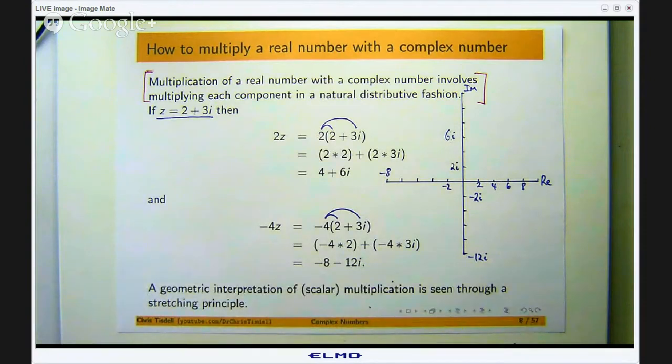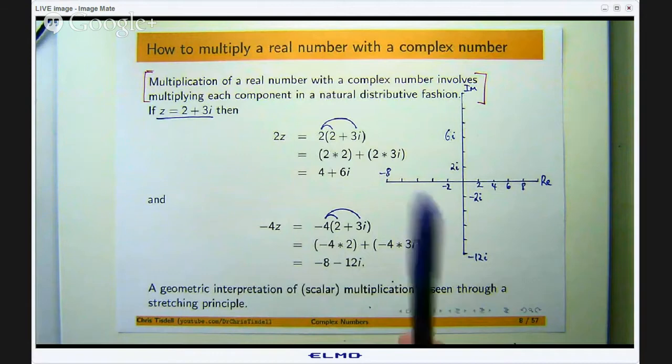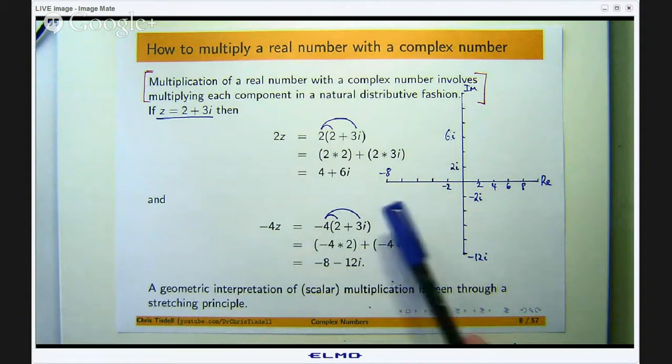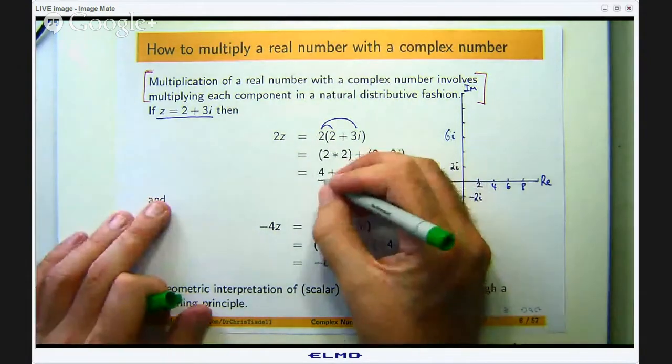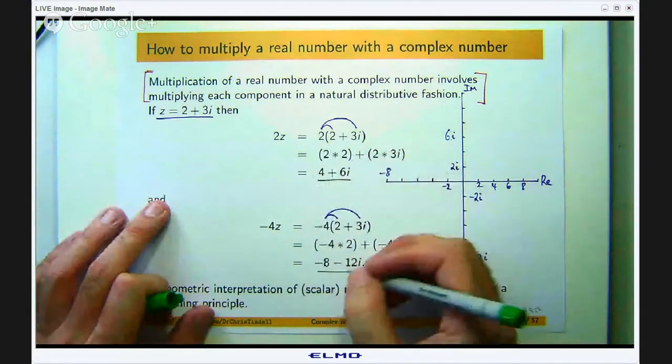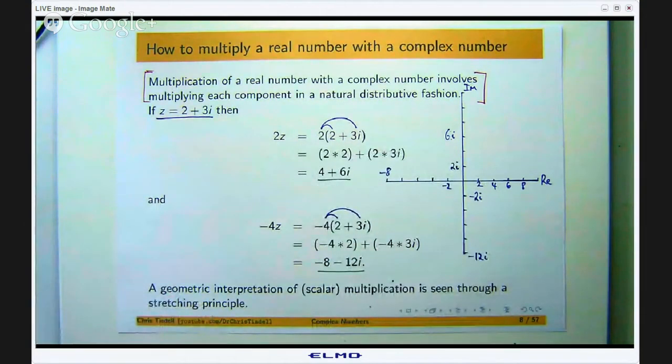Now when you multiply a complex number with another complex number it is a different matter. It is a little bit more complicated and I will show you that in another video. But let us talk about the geometry of these answers and what happens when you take a real number and you multiply it with a complex number.